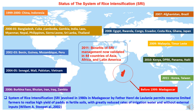The System of Rice Intensification was originated in the 1980s in Madagascar by Father Henry D. Laulanié. This method permits resource-limited, poor farmers to realize high yields of paddy in fertile soils while greatly minimizing irrigation water and without usage of external inputs. As of 1999, this method was known and practiced only in Madagascar, but by 2011 it had been studied in more than 44 countries in Asia, Africa, and Latin America.